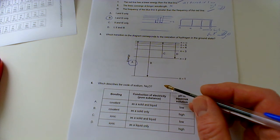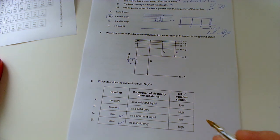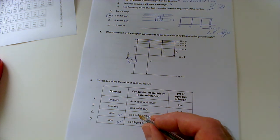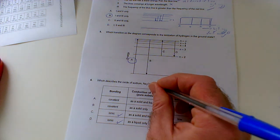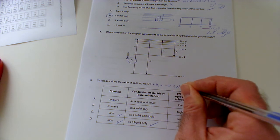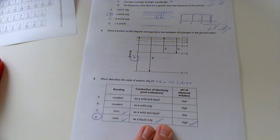Number six: which describes the oxide of sodium? Well, it's metal, non-metal, so we're looking for ionic. It won't conduct when it's a solid, only when it's a liquid, because the ions need to be free to move and carry a charge. And we'll get a high pH because if you add that to water, it reacts to give you sodium hydroxide, which is a strong alkali. So D is the right answer.